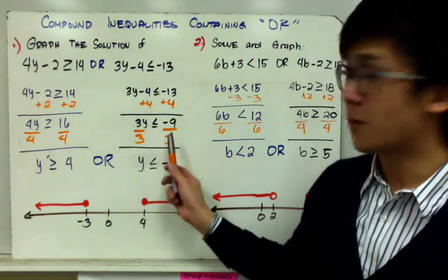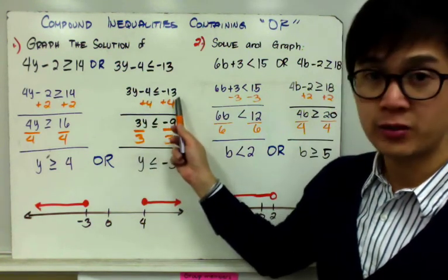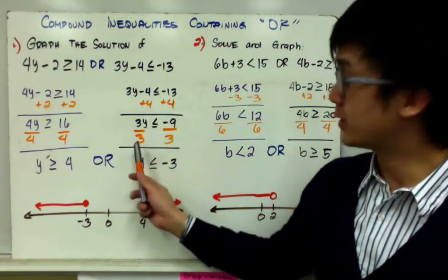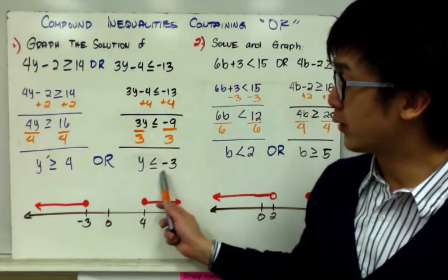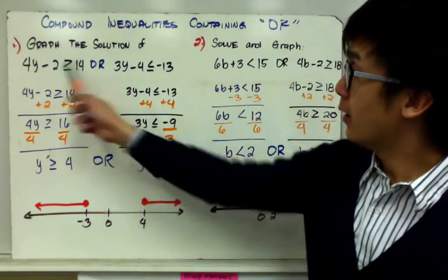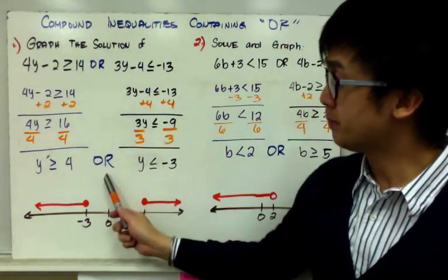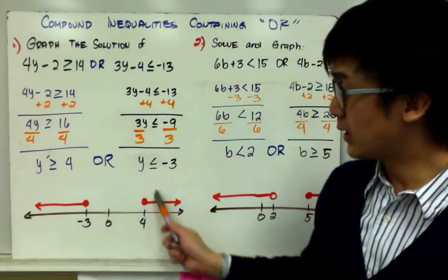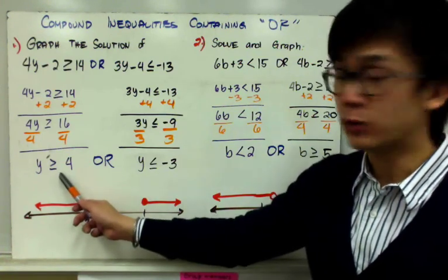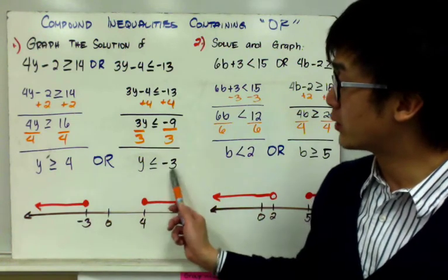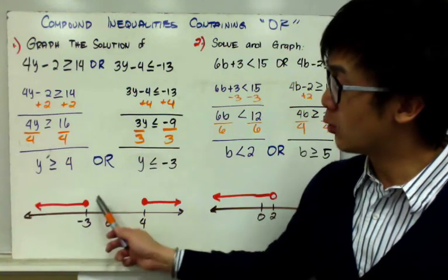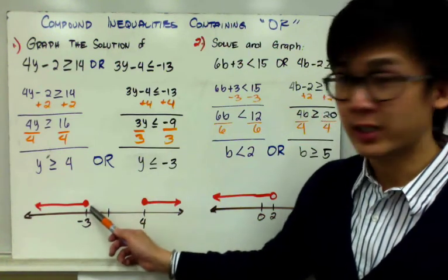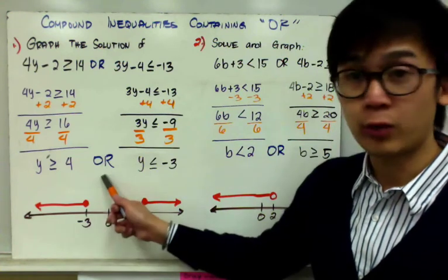To solve the other side, 3y minus 4 less than or equal to negative 13: add 4 on both sides, leaving 3y less than or equal to negative 9, then divide both sides by 3, giving y less than or equal to negative 3. To graph this OR compound inequality: y greater than or equal to 4 gets a shaded circle at 4 going right, and y less than or equal to negative 3 gets a shaded circle at negative 3 going left.